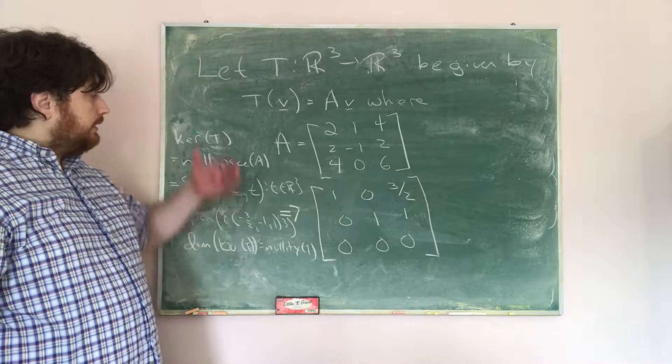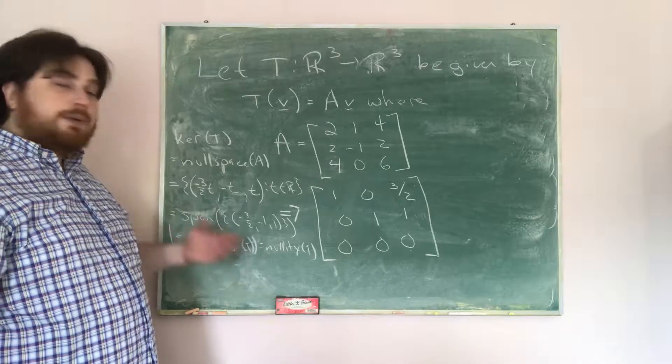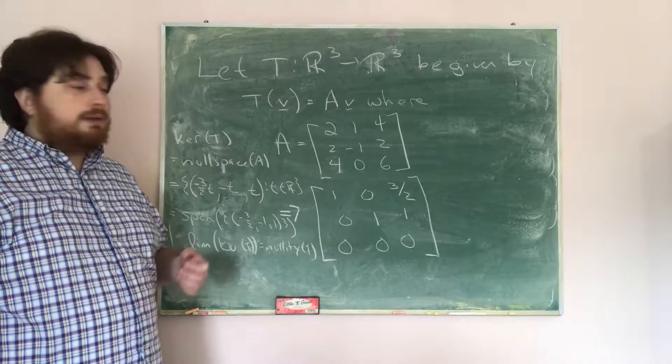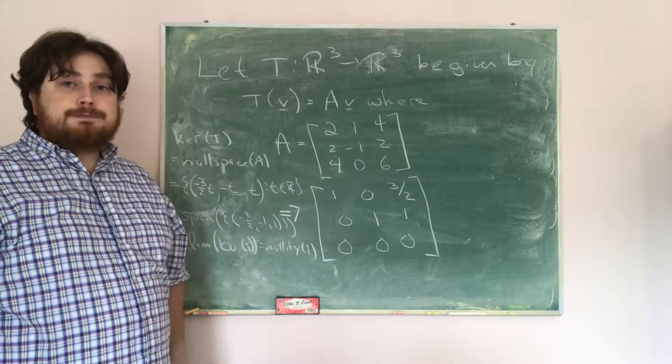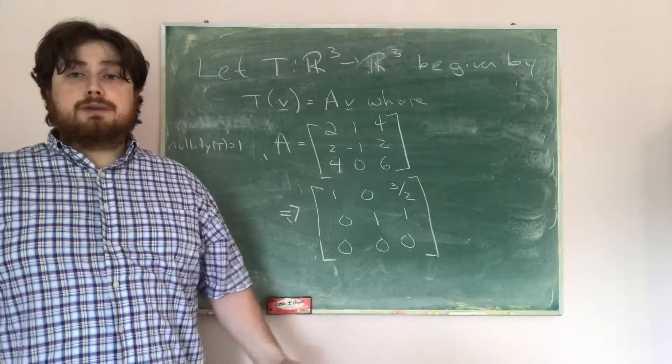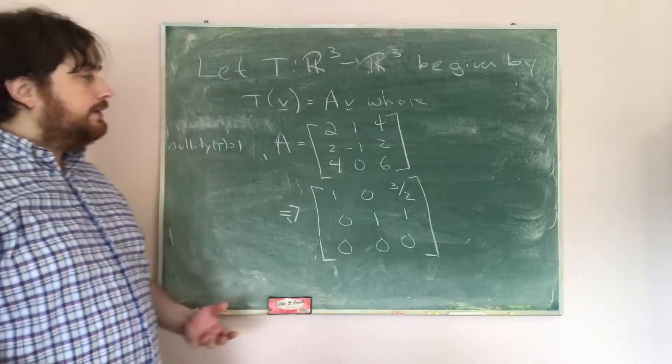And so what we've done is we've found the kernel of T, and we've found the nullity of T by finding the null space of A. Now that we've found the kernel and the nullity of T, what we're going to do is find the range and the rank of T.